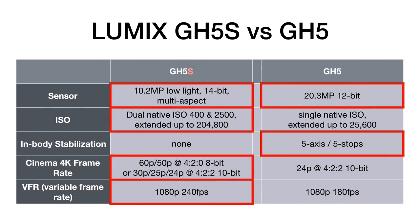Here's a quick winner comparison. Sensor size: no winner, there are advantages and disadvantages to both. ISO: the dual native ISO and higher ISO capability clearly goes to the GH5S. Stabilization: since the S doesn't have it, that win goes to the GH5 — unless you don't want or need it. Cinema 4K up to 60p and VFR up to 240 frames per second both go to the GH5S.